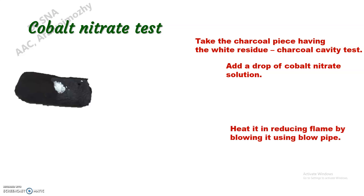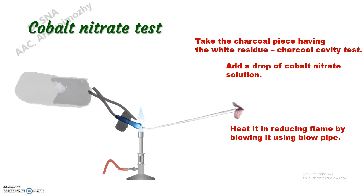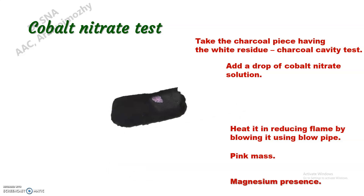Now we can heat it in the reducing flame using the blowpipe. After heating, we can see the white residue changes to a pink mass. This pink mass is an indication and confirmation for magnesium.